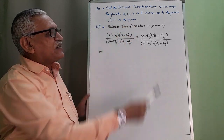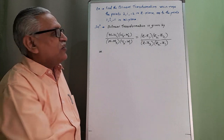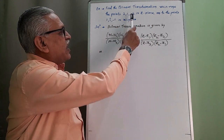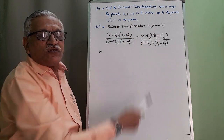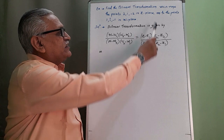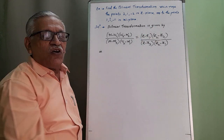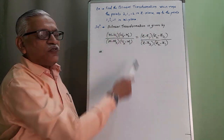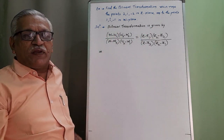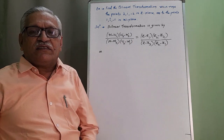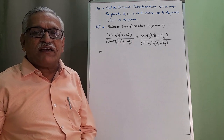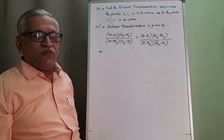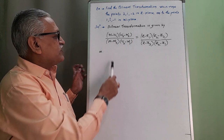Find the bilinear transformation which maps the points 2, i, and minus 2 in the z-plane onto the points 1, i, minus 1 in the w-plane. To find the bilinear transformation, we take the help of the formula of bilinear transformation.